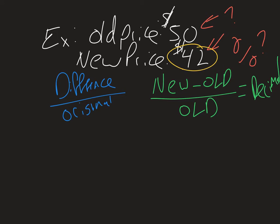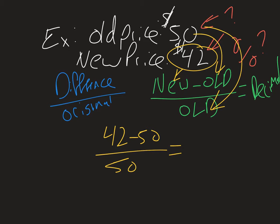So our new price is $42 and our old price is $50. So we're going to have $42 minus $50 all divided by $50. Which reduces to negative 8 over 50. And what this negative is telling us is that it decreased. Which we can see that it went down $8.